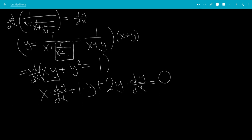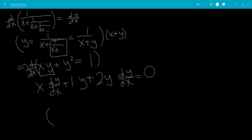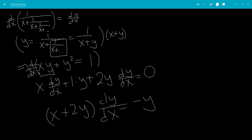So now we can factor out dy dx, leaving us with x plus 2y dy dx equals minus y. Now we can divide by x plus 2y, leaving us dy dx equal negative y over x plus 2y.